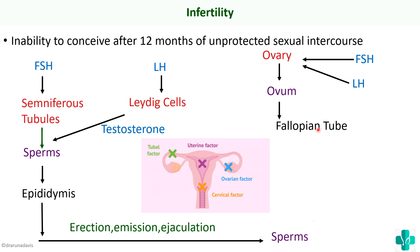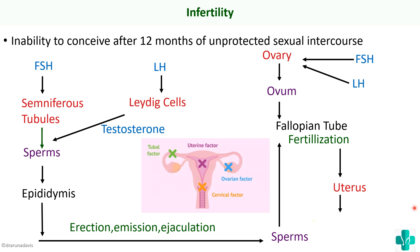In the female genital tract, the ovum has already reached the fallopian tube from the ovary. The sperms travel through the vagina to the uterus to the fallopian tube, and finally in the ampulla of the fallopian tube there will be fertilization. After fertilization, the embryo travels to the uterus and is implanted in the uterine endometrial wall, from where it grows into a mature fetus.